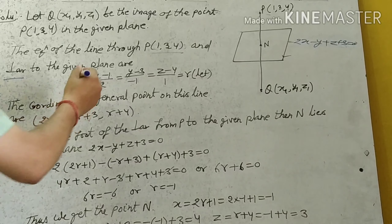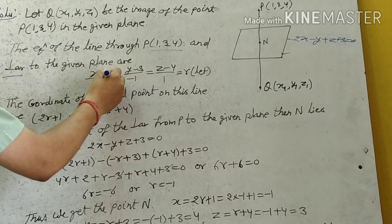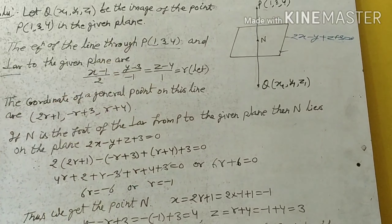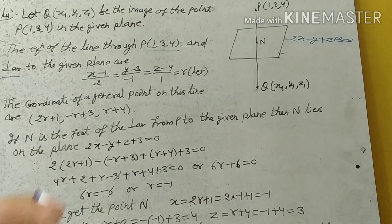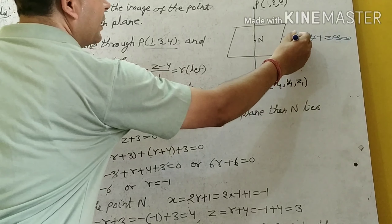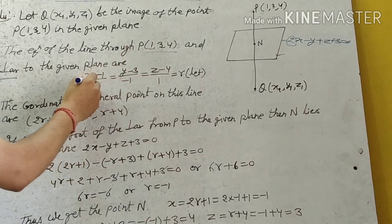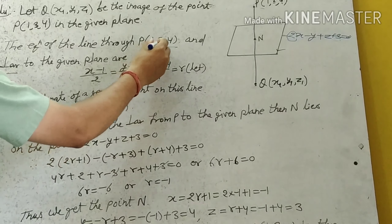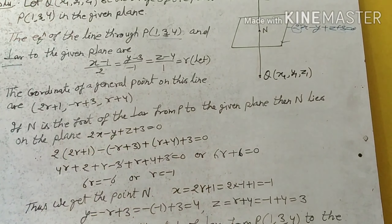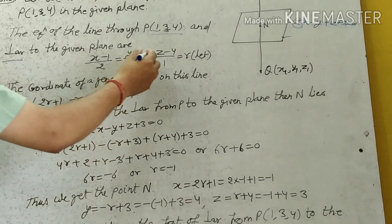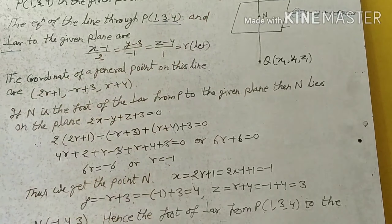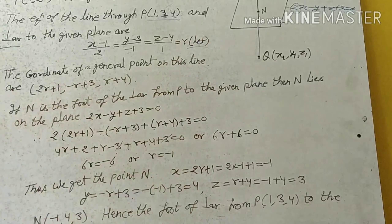The equation of the line is: (x minus 1) upon 2 equal to (y minus 3) upon minus 1 equal to (z minus 4) upon 1 equal to r. Here x1 is 1, y1 is 3, and z1 is 4 — the coordinates of point P — and the direction ratios come from the coefficients of x, y, z in the plane equation: 2, minus 1, and 1.